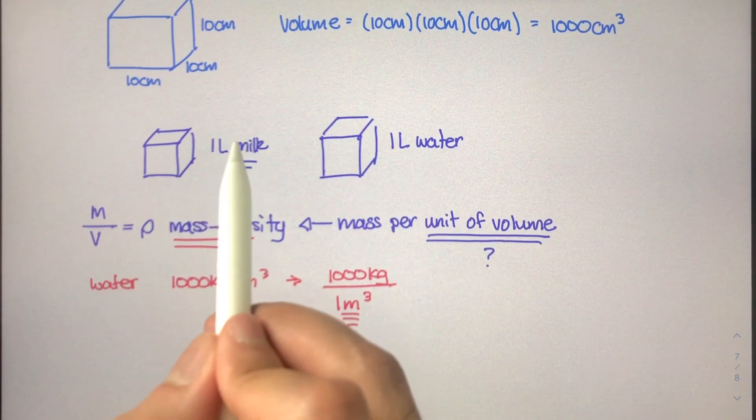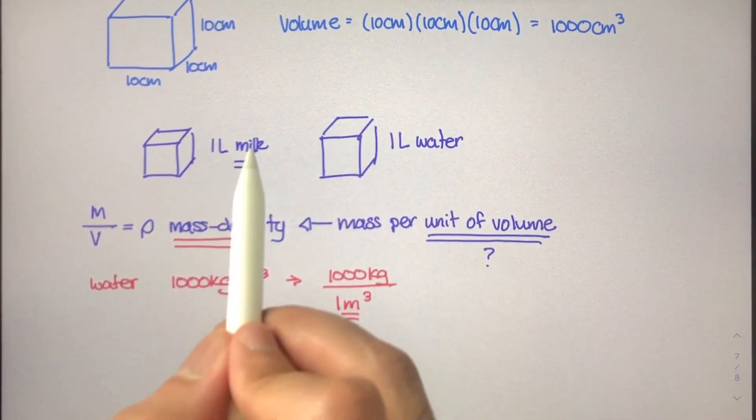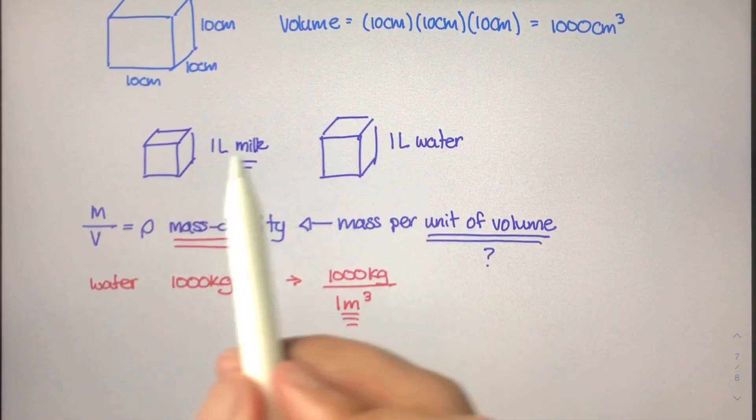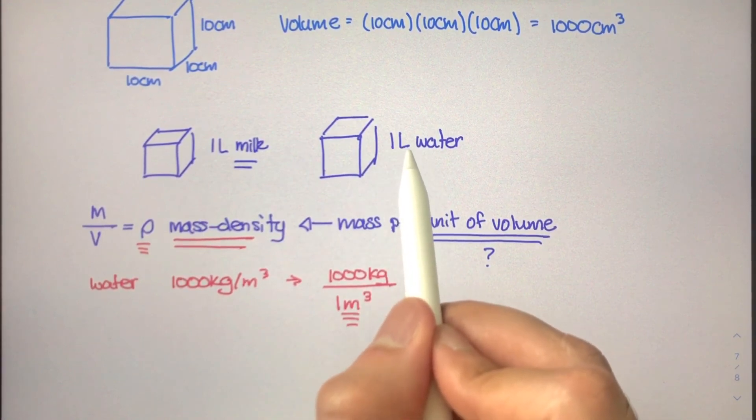So going back to mass density, mass density is really how much mass is there per unit of volume, in this case per meter cubed. And that really is the basic concept of mass density. So if we know that milk has a higher mass than water, we can take the mass of milk, divide it by one liter, and we'll notice that the mass density we get for milk is slightly higher than the mass density that we get for water.